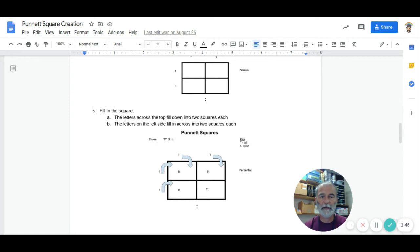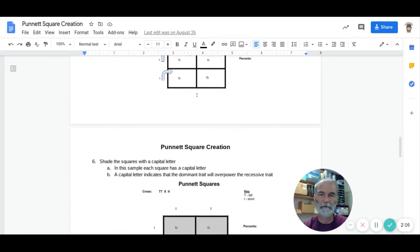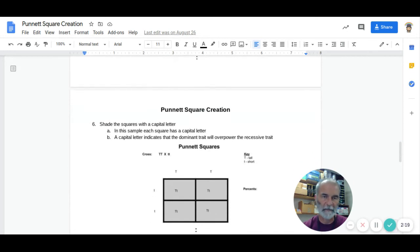Then we fill in the square. The ones across the top get filled down into the two boxes below them, and the ones on the left side get filled to the right. Another way to look at it: this box is filled in from above and from the left. One letter from each parent in each box. So, we now have four little kids inside the Punnett square. They're not real kids though, just kids that could possibly happen.